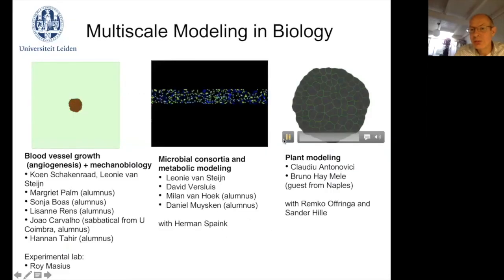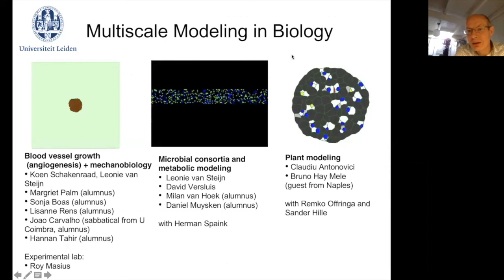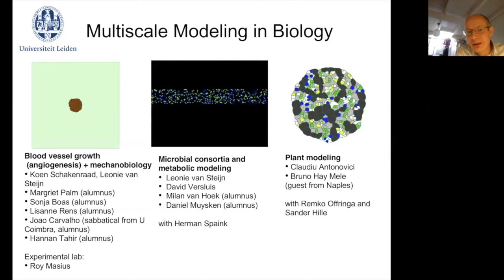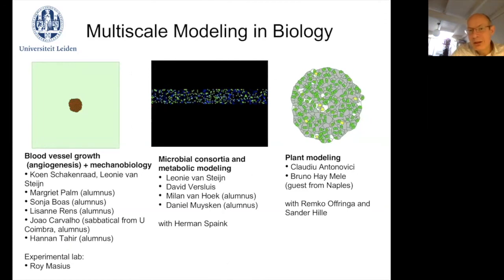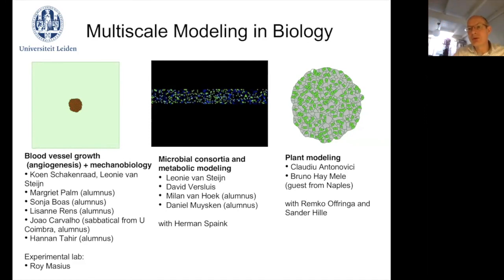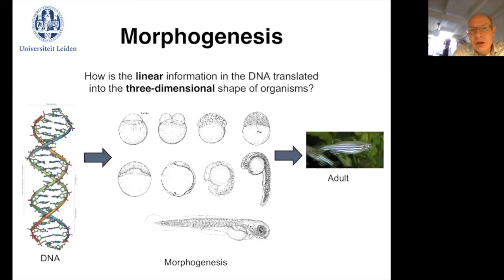For example, this is a model of stomatal patterning in Arabidopsis leaves. Although this covers a quite big variety of topics, the overarching themes we're interested in are how single cell behavior, or dynamics at the level of single cells, translates to collective cell behavior, and how the collective cell behavior generated by these cells feeds back on individual cell behavior. We are particularly interested in these kinds of multi-scale feedback loops. What really motivates me, what really interests me, is morphogenesis — understanding how the linear information in the DNA is translated into the three-dimensional shape of organisms.